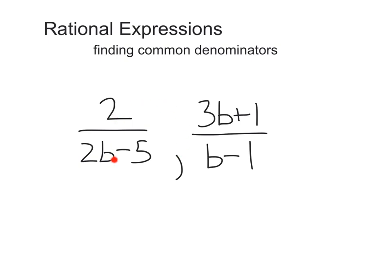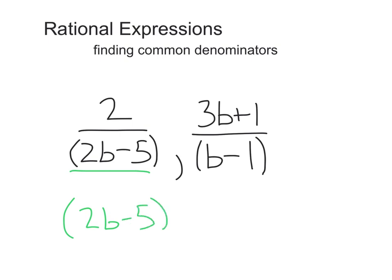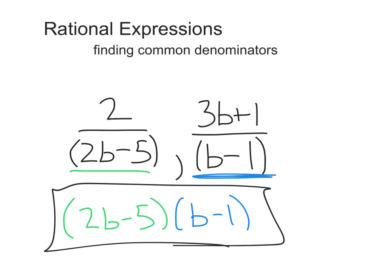In this example we've got two over (two b minus five) and (three b plus one) over (b minus one). Remember, whenever we have an addition or subtraction sign, it automatically groups all components together — so two b minus five is grouped, and b minus one is also grouped. Since two b minus five is not the same as b minus one, they can't account for each other, so we put two b minus five in our LCM. We still have b minus one not accounted for, so we include that as well. Our least common multiple is (two b minus five)(b minus one).